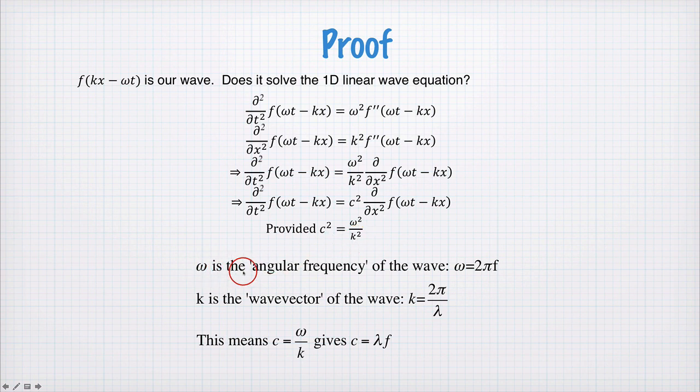Omega, as we've mentioned before, is the frequency or angular frequency of the wave. That's equal to 2 pi f, where f is the linear frequency in hertz. k is the wave vector of the wave, it's 2 pi divided by lambda. This means c equal to omega on k is actually the same equation as c equal to lambda f, which you've probably seen before for waves.